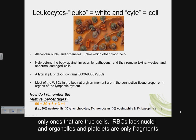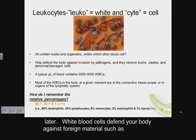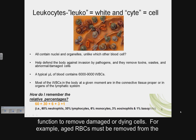Red blood cells lack nuclei and organelles, and platelets are only fragments of a larger cell. White blood cells defend your body against foreign materials such as bacteria, viruses, or cells from another person. They remove toxins and wastes, and also function to remove damaged or dying cells — for example, aged red blood cells must be removed from the circulation.